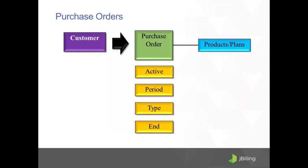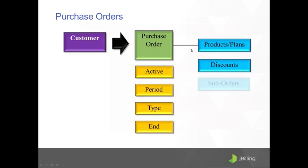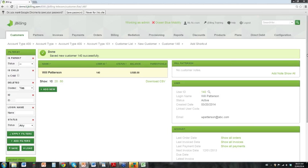Let's go ahead and create a purchase order. The customer is the one purchasing goods and services — that could be a parent account, a child account, whoever is using those services. The purchase order defines how long the services are active, how often we bill for them, whether it's prepaid or postpaid, and whether the services end at any time. On a purchase order we can add products or plans, add discounts, have sub-orders, and make changes to those orders.